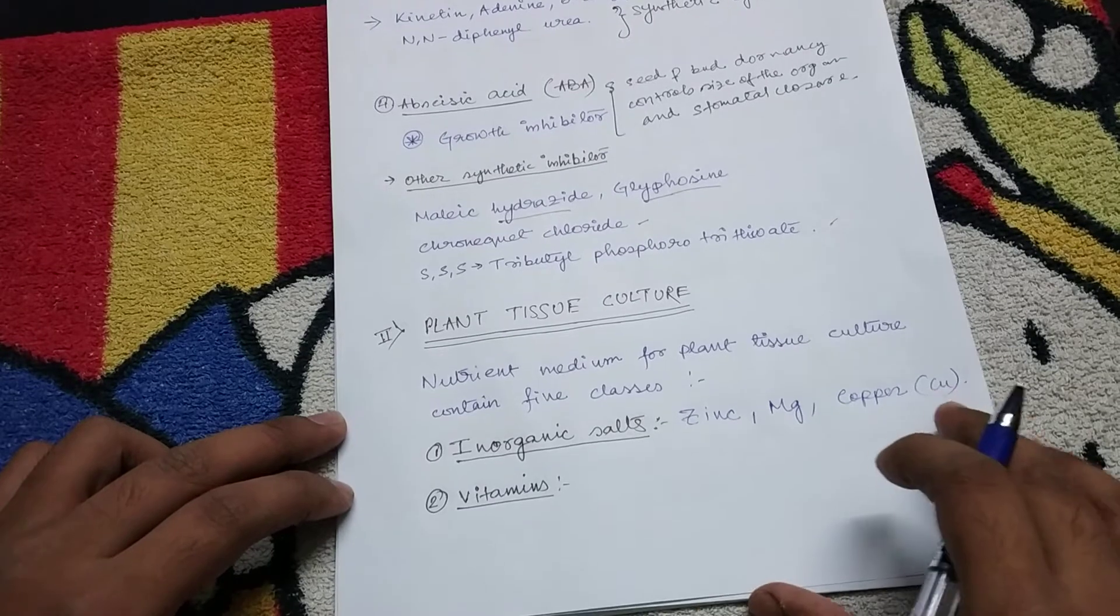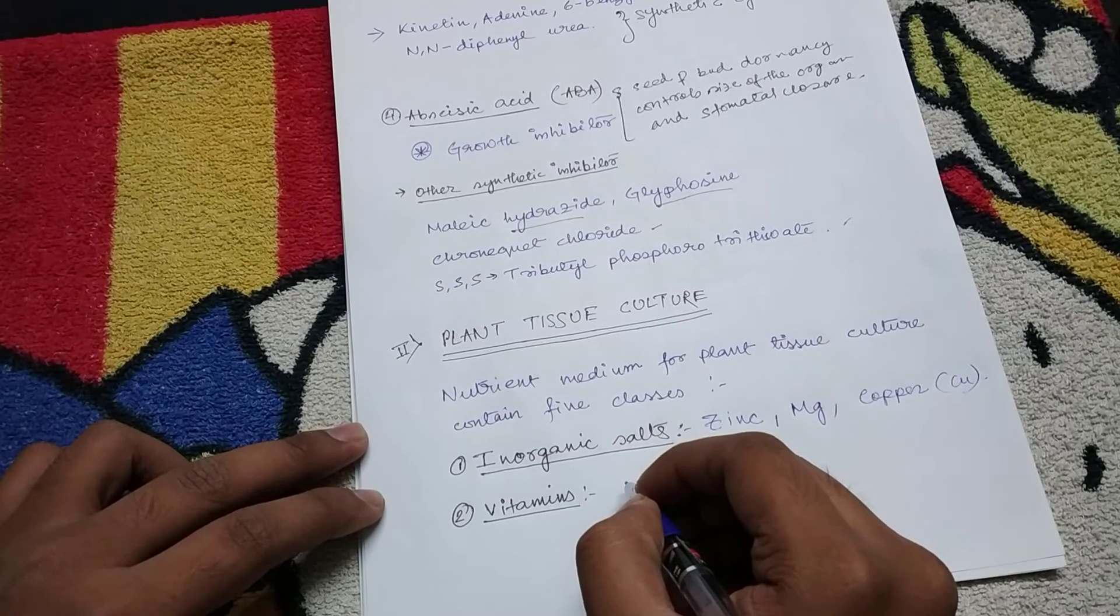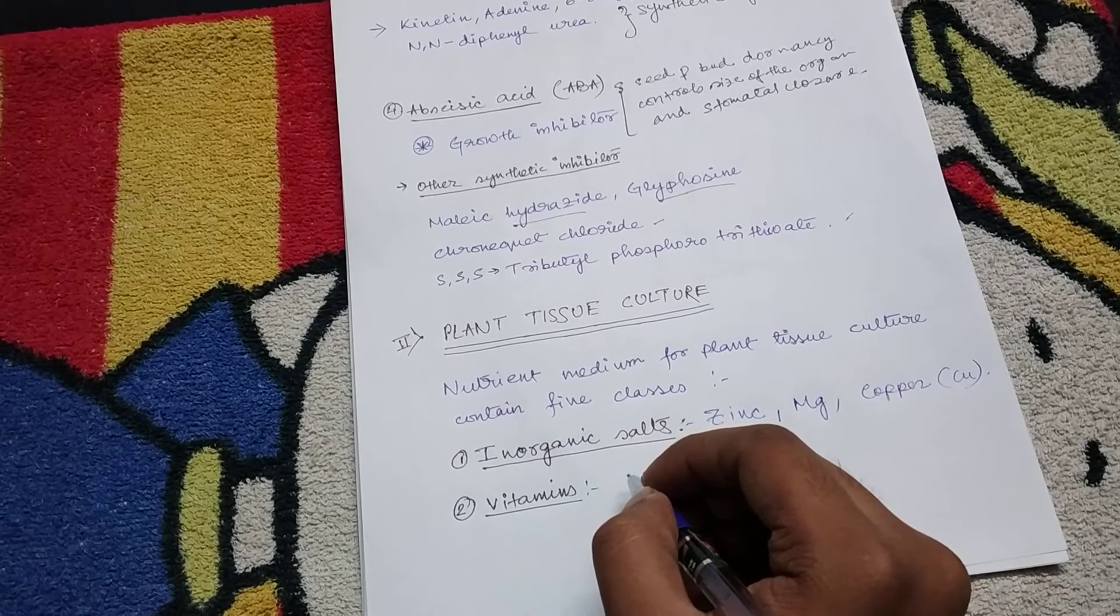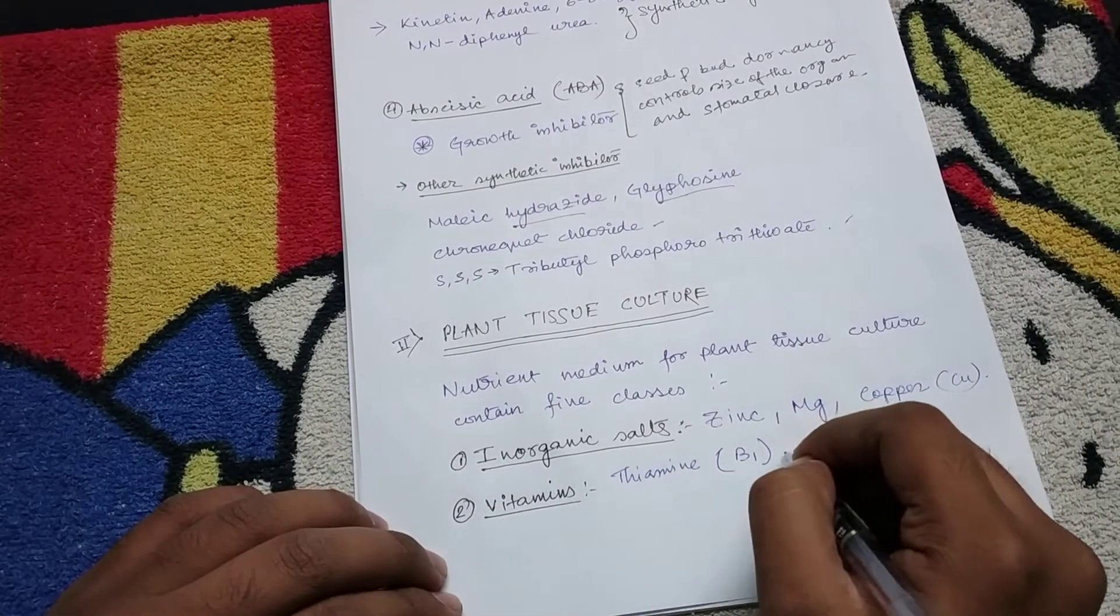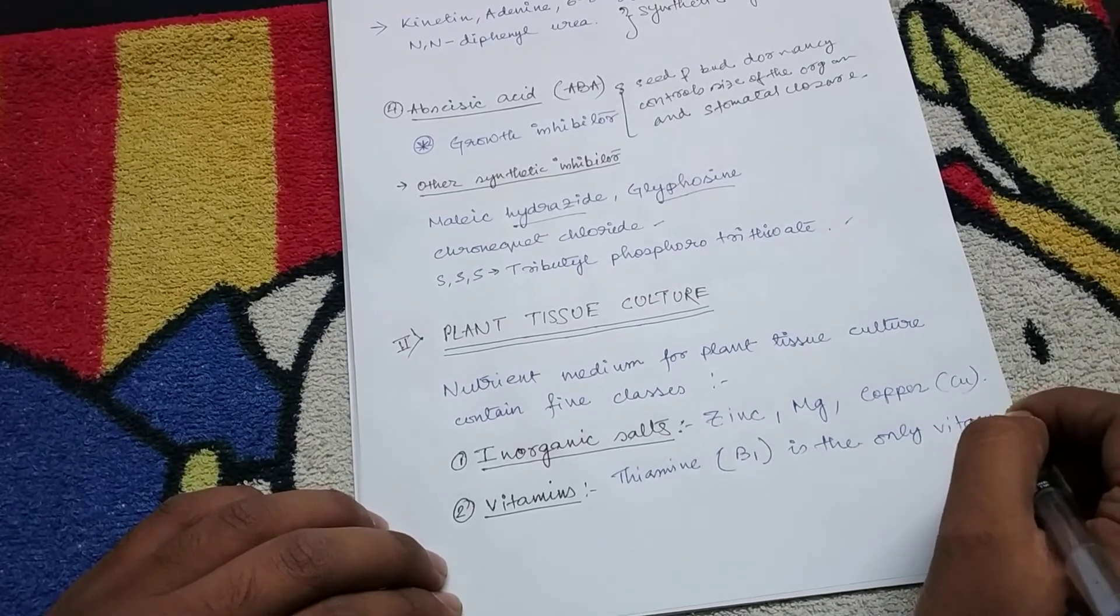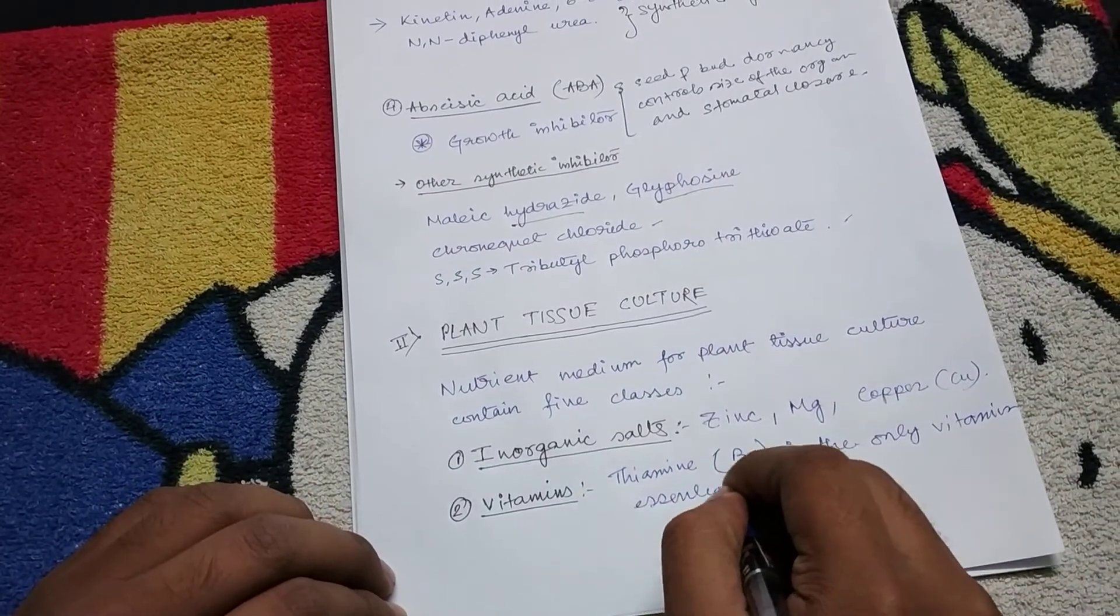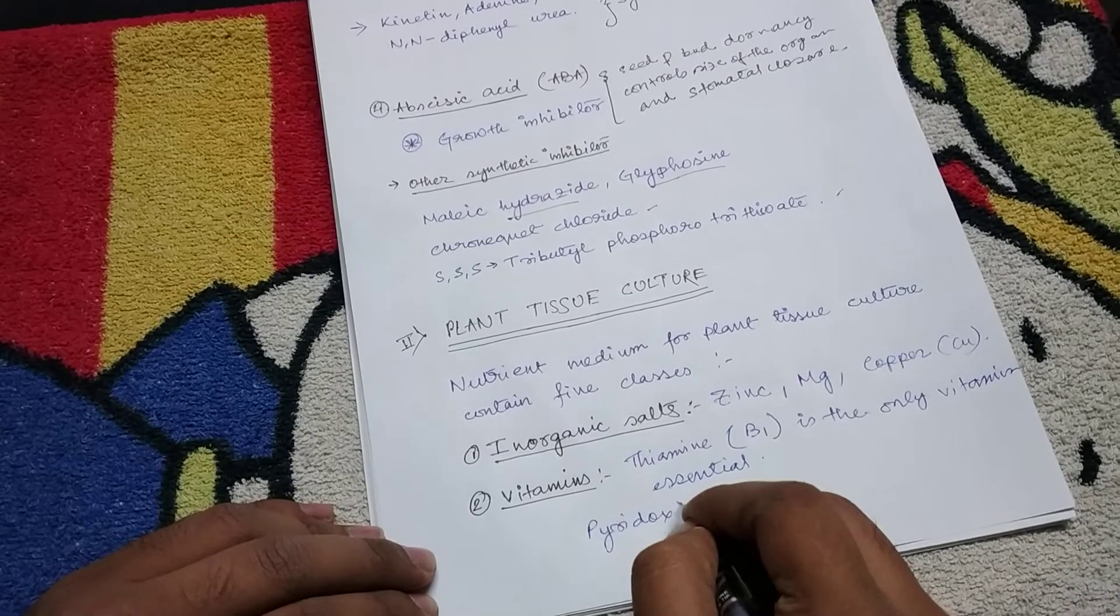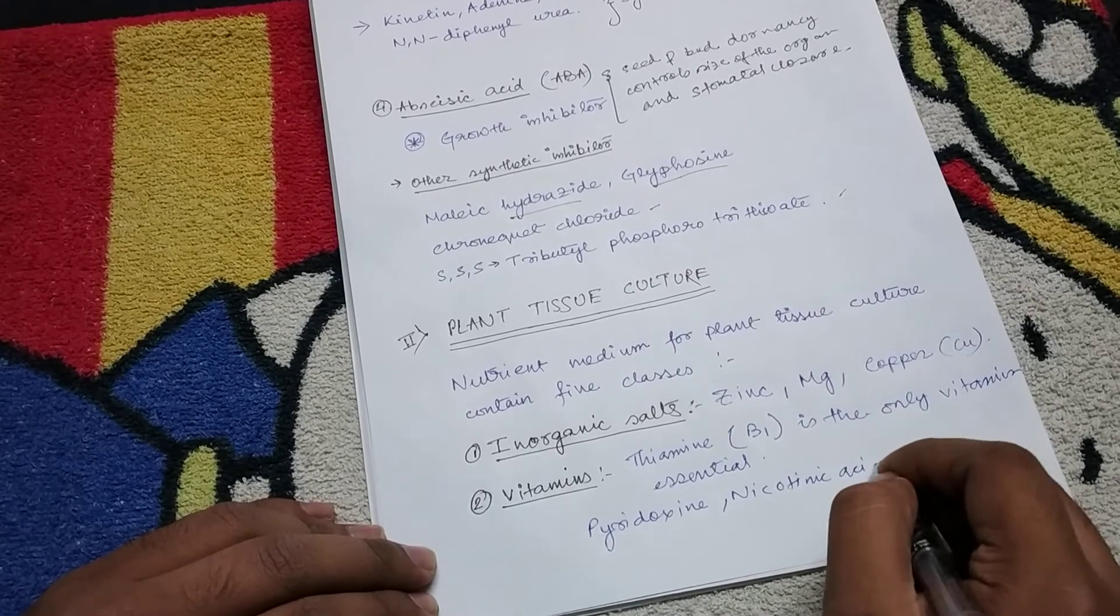Then vitamins which are required are thiamine, pyridoxine, nicotinic acid, and myo-inositol. But thiamine or vitamin B1 is the only vitamin essential. The rest can be present, like pyridoxine and nicotinic acid.